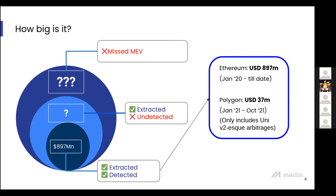Out of all MEV that's extractable, only a fraction is actually extracted, and yet another subset of that is identified by various methods of analyzing transactions. Flashbots' methods implemented in MEV Inspect Py showed around $897 million worth of MEV extracted over a period of two years from January 2020. Running a similar modified version on Polygon yielded around $37 million worth of MEV since January 2021 to October 2021, and that only includes Uniswap V2 swap-based arbitrages. Since TVL on Polygon primarily grew in May 2021, the $37 million is a far underestimation.